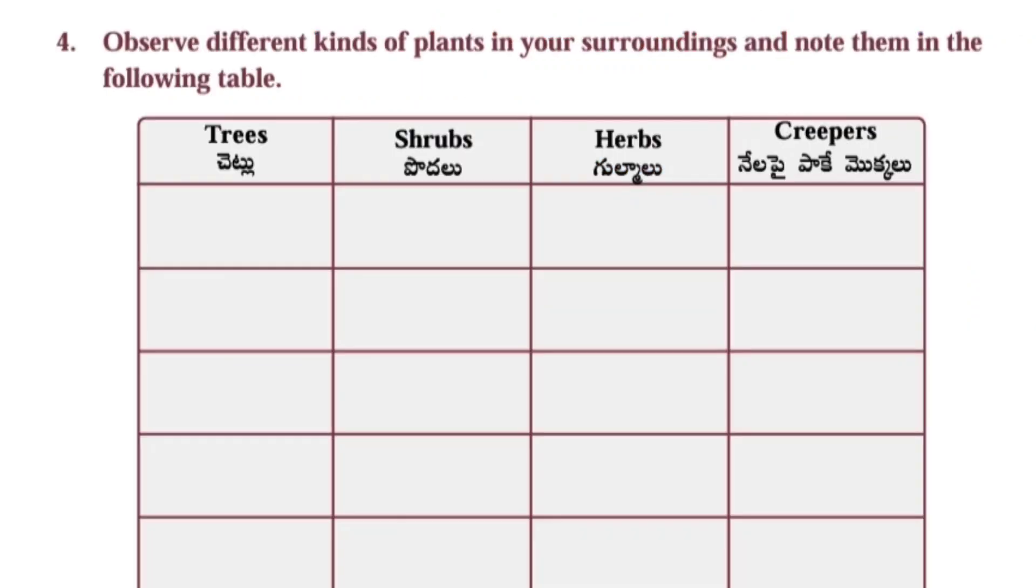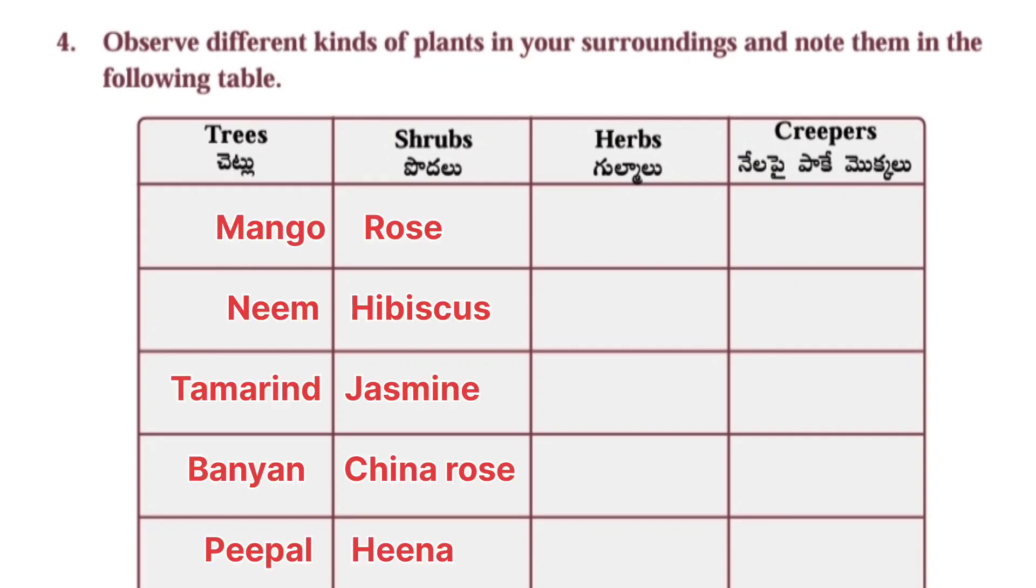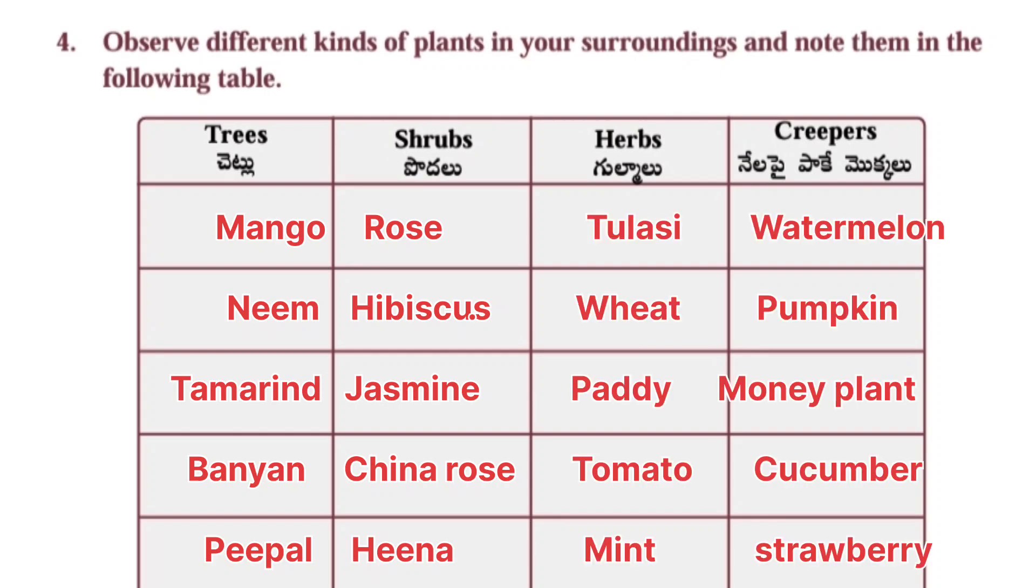Next one: Observe different kinds of plants in your surroundings and note them in the following table. Trees: here we have to write the trees in your surroundings - mango, neem, tamarind, bunion, peepal. Shrubs: rose, hibiscus, jasmine, china rose, heena. Herbs: tulasi, wheat, paddy, tomato, mint. And creepers: watermelon, pumpkin, money plant, cucumber, and strawberry.